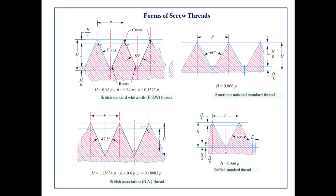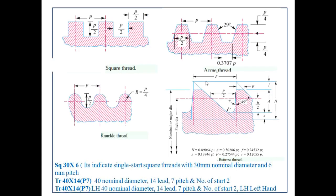The Unified Standard thread: three countries — Great Britain, Canada, and the United States — came to an agreement for a common screw thread system with an included angle of 60 degrees, to facilitate the exchange of machinery. The threads have rounded crest and root. The difference between American National Standard and Unified Standard is that in American standard the root and crest are flat, while in Unified Standard fillets are present at the root and crest.